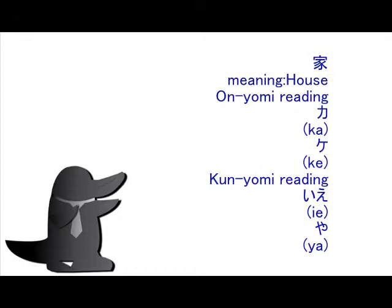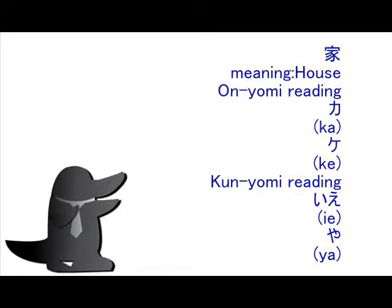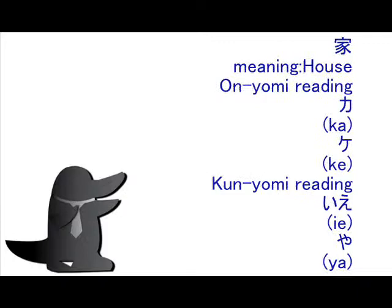The main meaning of this Kanji is 'House.' In Onyomi reading, you can read it as Ka and Ke. In Kunyomi reading, you can read it as Ie and Ya. There is no Okurigana for this Kanji.